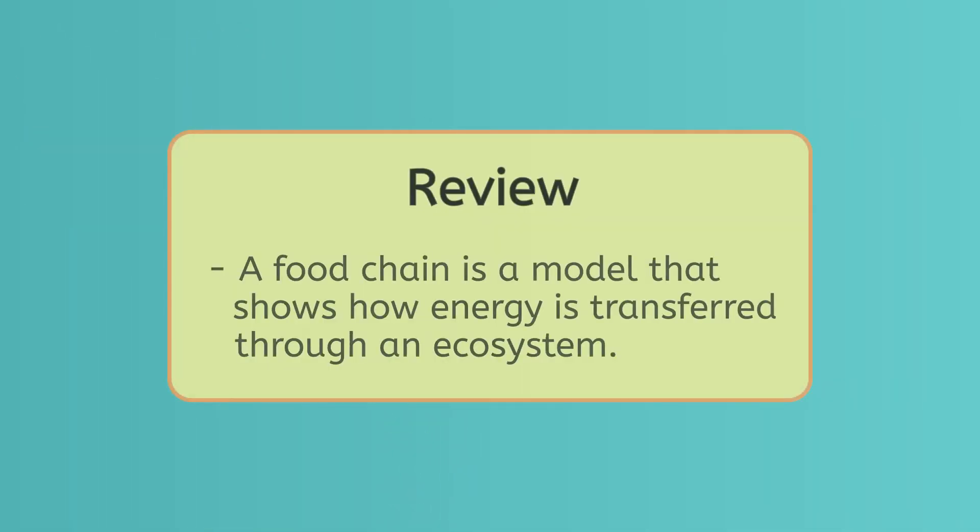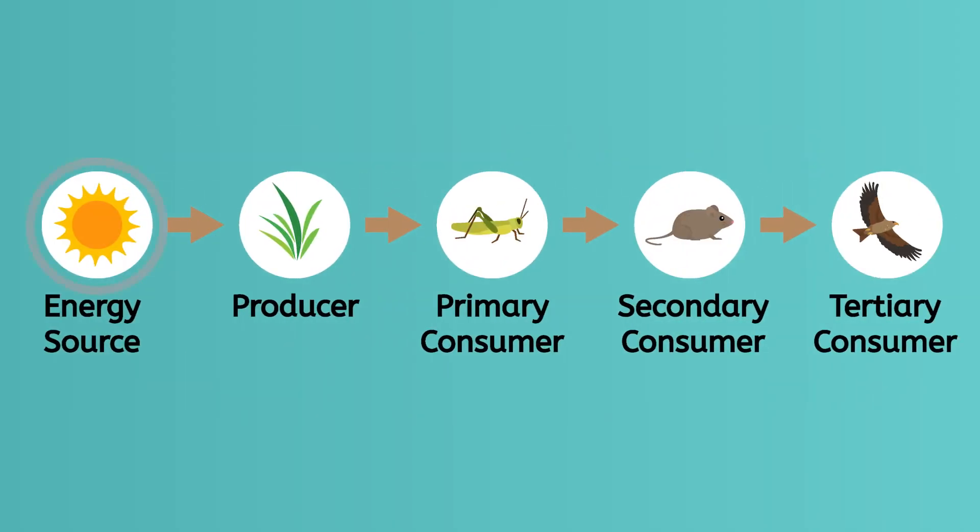Let's review everything we've learned today. A food chain is a model that shows how energy is transferred through an ecosystem. Food chains begin with an energy source, like the sun, the energy from which is transformed by producers.